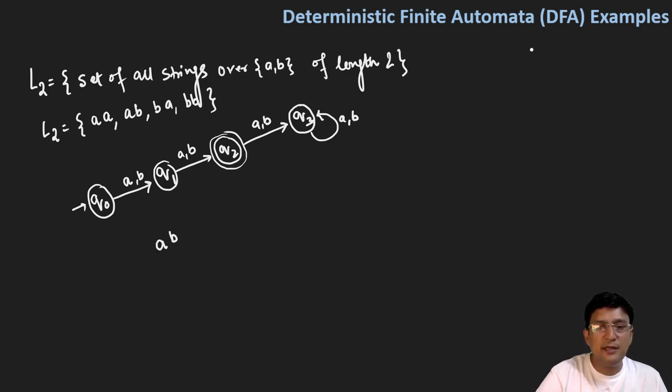Let's see if these are getting accepted by this automata or not. So with the string ab, starting with q0 on a you move to q1 and then with symbol b you move to q2. And q2 is the final state, hence the string has got accepted.